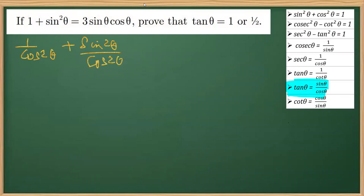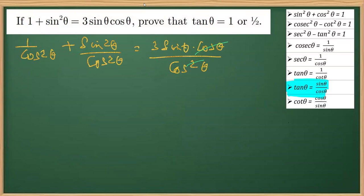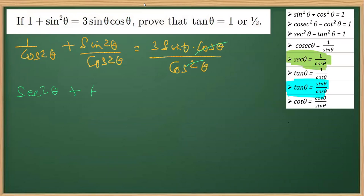On the right-hand side we have 3sinθcosθ divided by cos²θ. One cos cancels out, and on the left-hand side, 1 over cos²θ is sec²θ. So we have sec²θ plus sin²θ over cos²θ. We know sec is 1 over cos, so that's what we did.